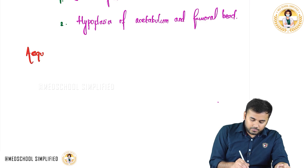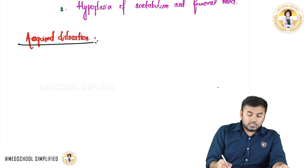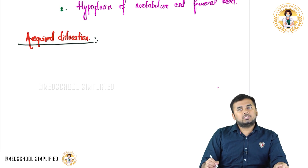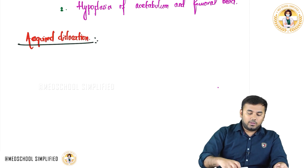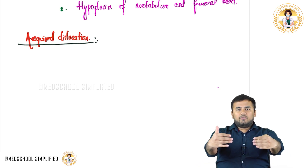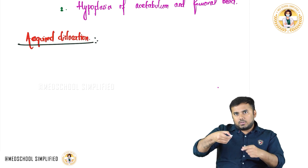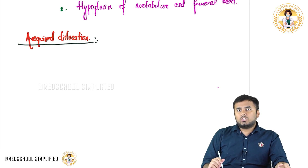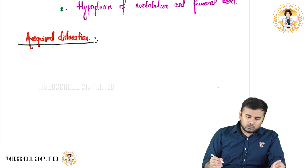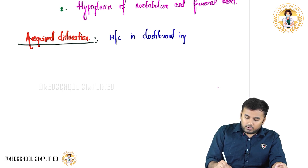The next important type is acquired dislocation. Acquired dislocations are most commonly seen in dashboard injuries. For example, when sitting in a car and a vehicle hits, the dashboard strikes the knees and pushes the femur posteriorly, resulting in a posterior dislocation. So in acquired dislocation, the most common mechanism is dashboard injuries.